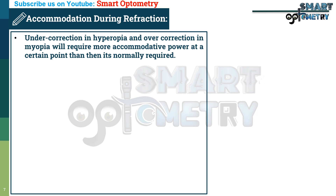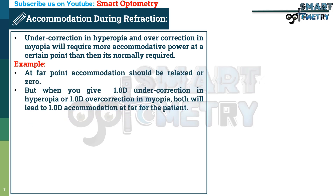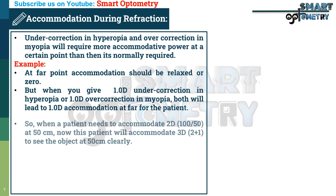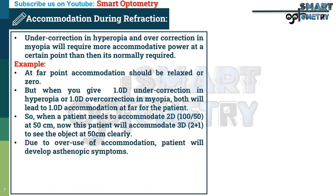Undercorrection in hyperopia and overcorrection in myopia will require more accommodative power at a given distance than is normally required. For example, at the far point accommodation should be relaxed or zero. But when you give 1 diopter undercorrection in hyperopia or 1 diopter overcorrection in myopia, both lead to 1 diopter of accommodation at the far point. So when a patient normally needs 2 diopters at 50 cm, they will now need to accommodate 3 diopters, leading to asthenopic symptoms from overuse of accommodation.